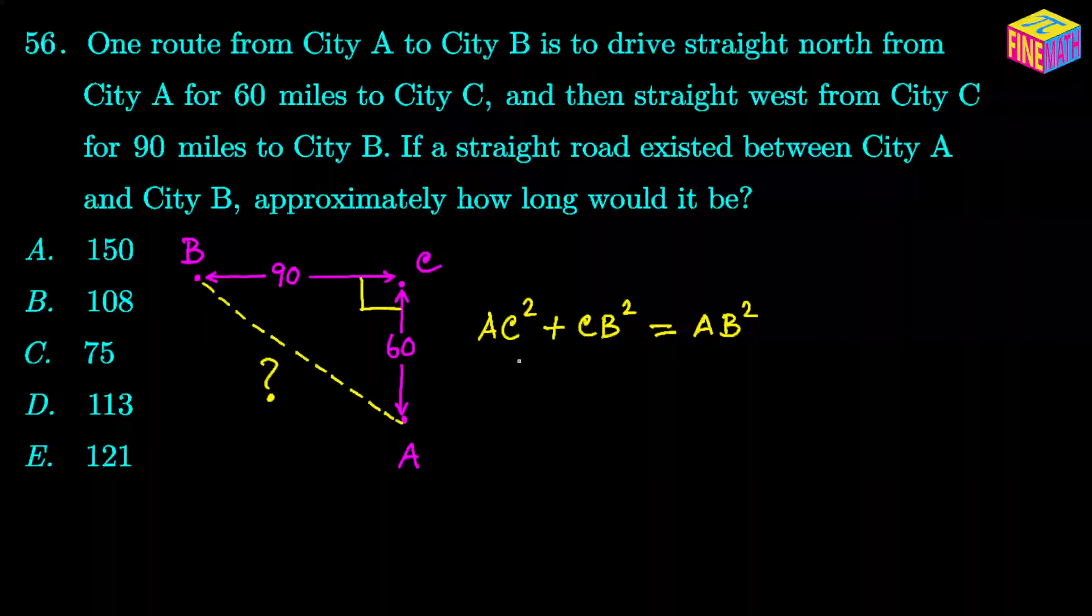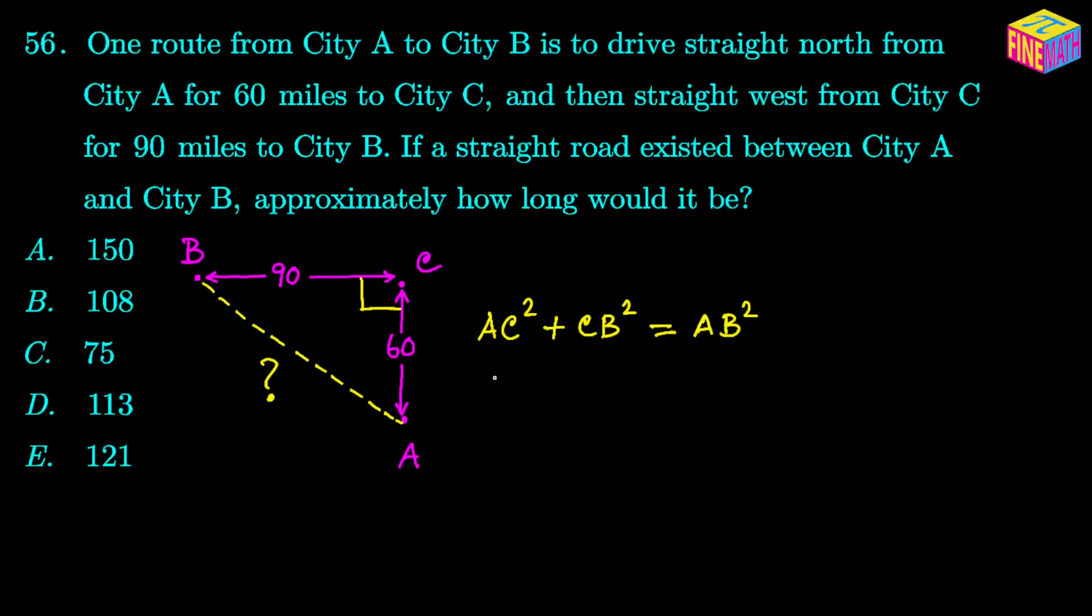Here we know the value of AC and CB. So let's substitute the values. From here we can say AC is 60 squared plus 90 squared equals AB squared.